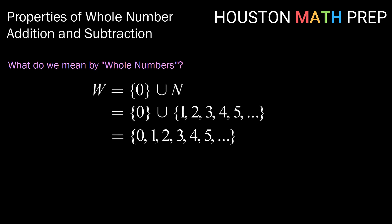When we take the union of those two sets, we are adding them together. So that is 0, 1, 2, 3, 4, 5, 6, and so on. That is our set of whole numbers.